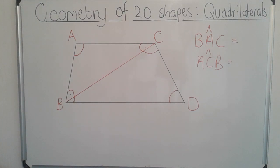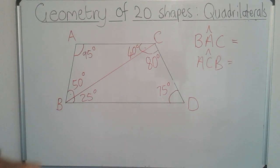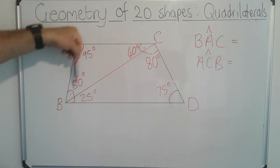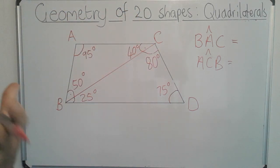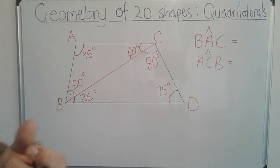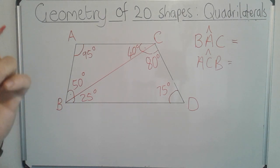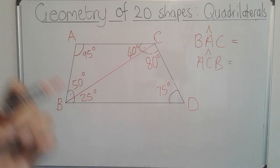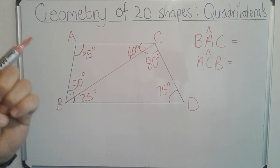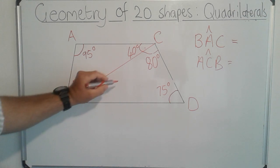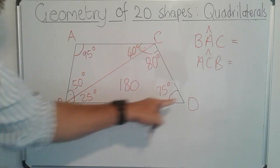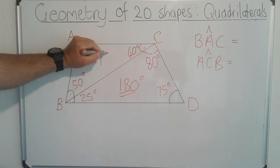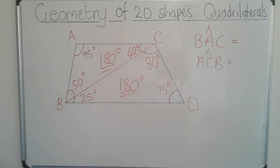On my quadrilateral I measured all my angles and came up with 95°, 40°, 50°, 25°, 80°, and 75°. Remember when we went through triangles last term — the total of all three angles inside a triangle is 180°. Any triangle's internal angles add up to 180°. This triangle over here adds up to exactly 180° and likewise this triangle over here also adds up to 180°.